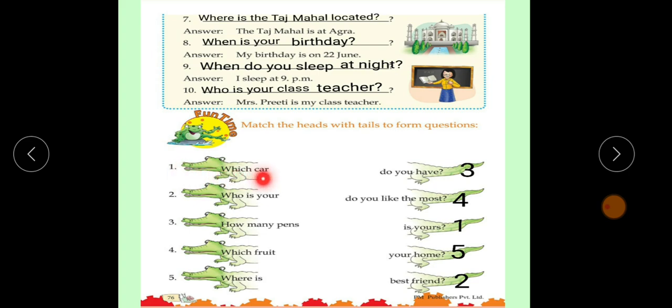Number 1 is, which car? The answer is, is yours. Tumhari kaunsi kar hai? Number 2. Who is your best friend?